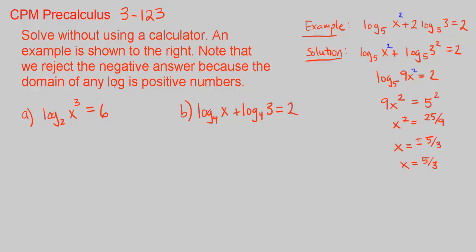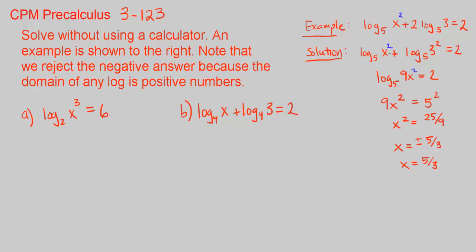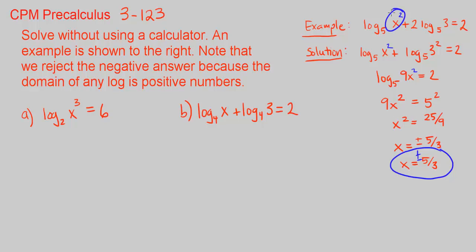As they note here, we reject any negative answer because the domain of any log is positive numbers — we cannot put a negative x inside a log. However, since it's x squared here, it can be plus or minus. So plus or minus 5 over 3 is the solution for the example, since the input is x squared.